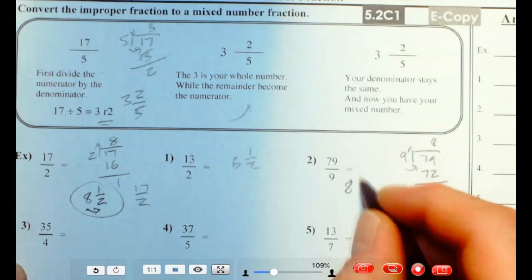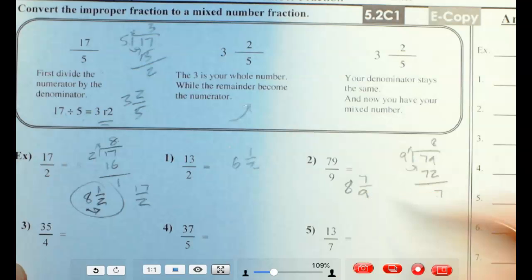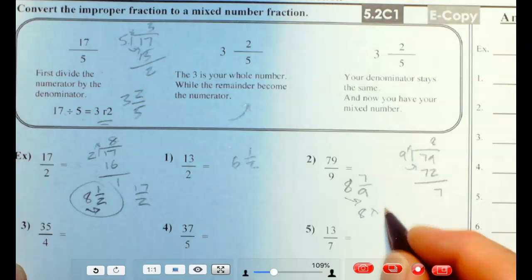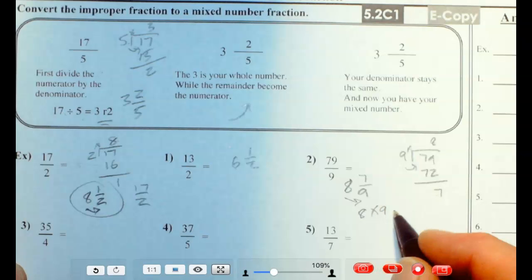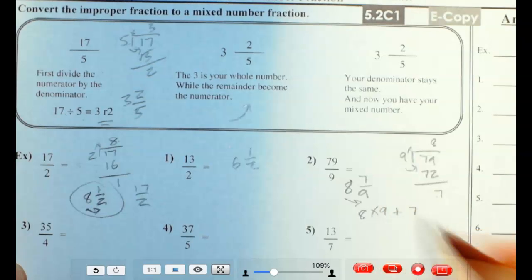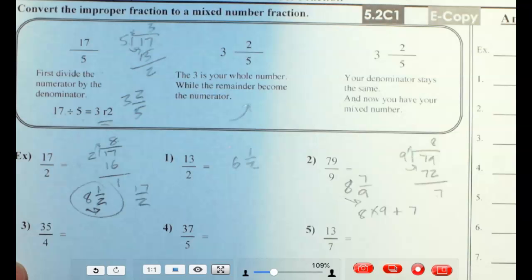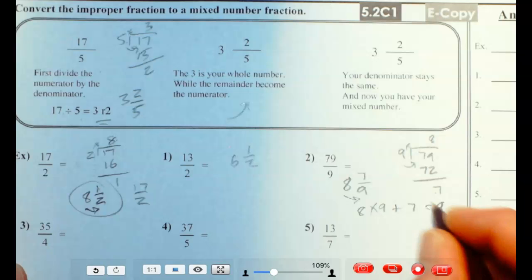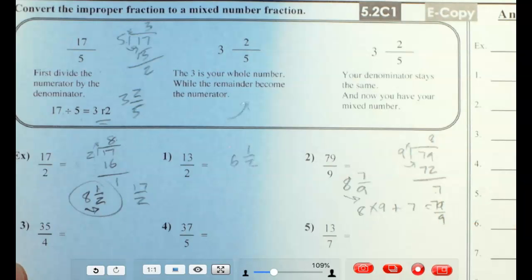That would be 7 left over. So it goes in at 8 and 7 ninths. 8 and 7 ninths. Let's just check my answer. 8 times 9 is 72. Plus 7 is 79 ninths. Okay? All right. Try another one of these.